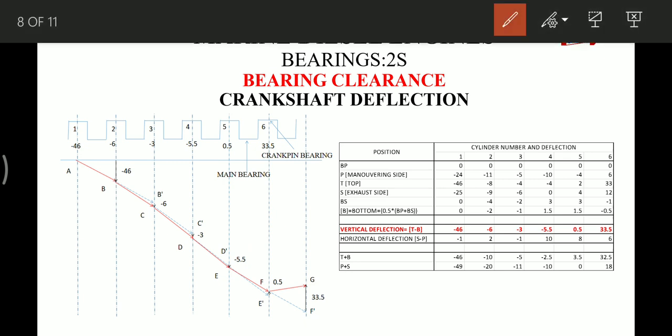So to find out the bottom position readings, that is B, we have to add BP and BS and then divide by 2. So that gives the reading of B, point B, position B. So these are the readings of position B.